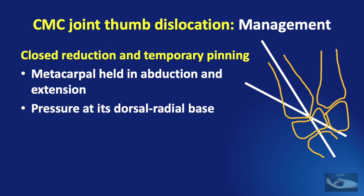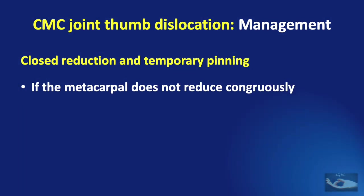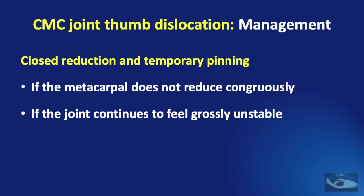Pressure at the dorsal radial base seats the metacarpal and approximates the metacarpal beak to the volar ligament to encourage ligament healing. If the metacarpal does not reduce congruously or remains dorsally or laterally translated, or if the joint feels grossly unstable, it must be assumed that soft tissue is interposed or that a small undetected bony fragment is preventing reduction, and open reduction is indicated.